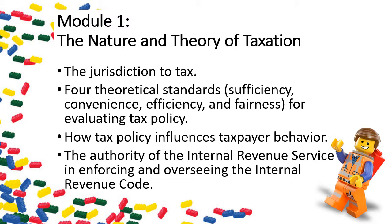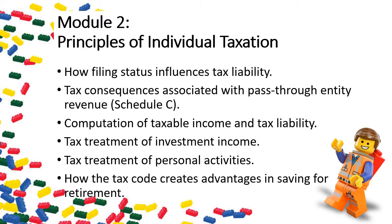We'll also look at how the tax code is created and how it is enforced. In the second module, which comprises the bulk of this course, we'll examine the principles of individual taxation — starting with the calculation of taxable revenue, what comprises income and taxable income, what is excluded through deductions, the standard or itemized deduction, tax credits, and how the tax code incentivizes decisions such as buying a house.